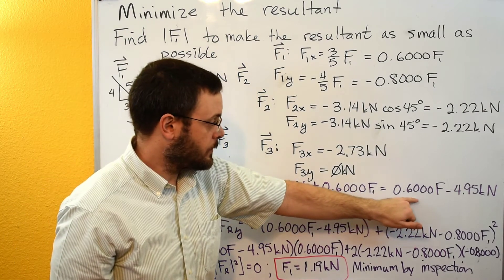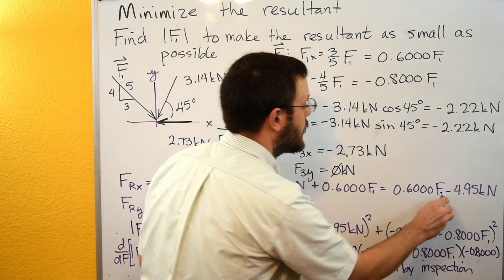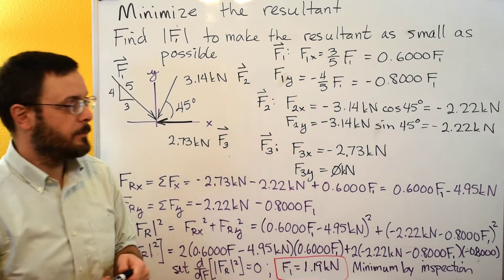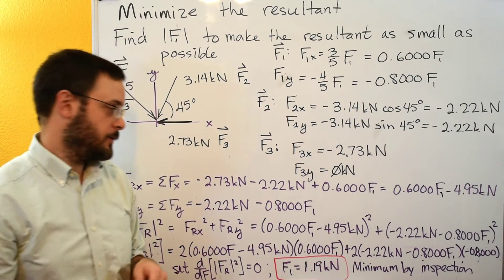Add it all up and we'll get the 0.6 F1 minus 4.95 kilonewtons.